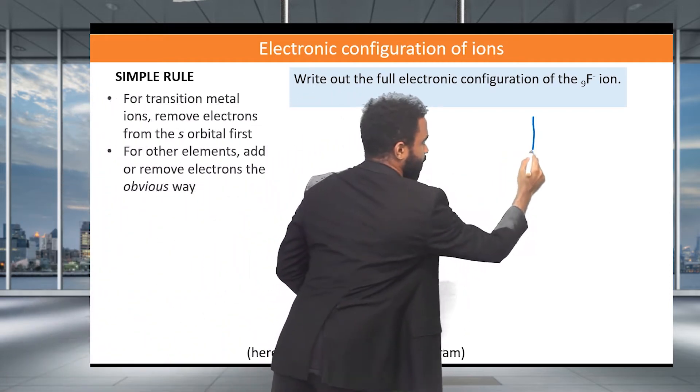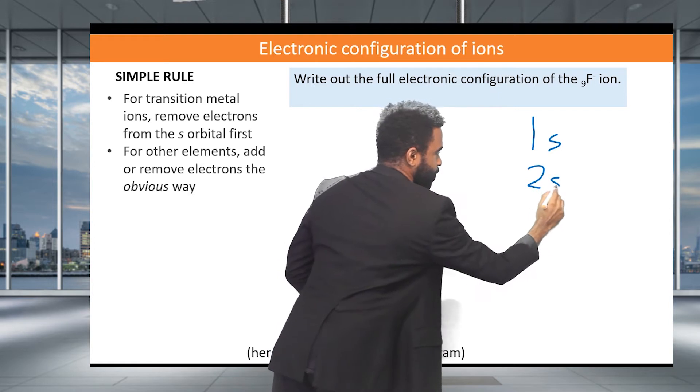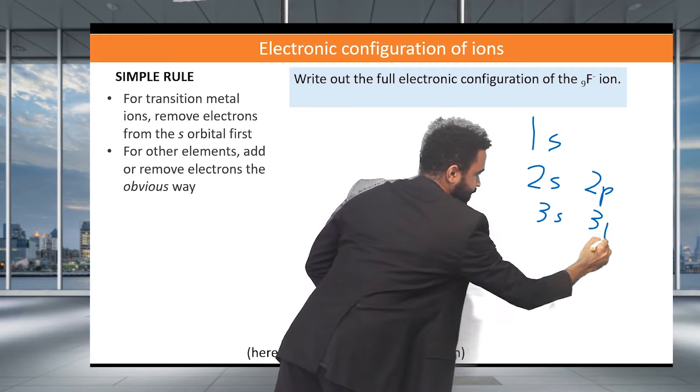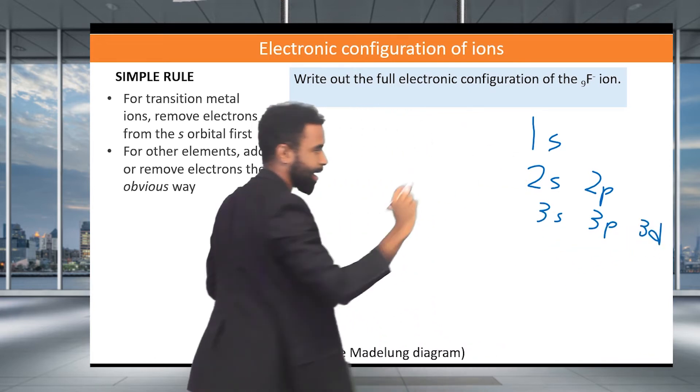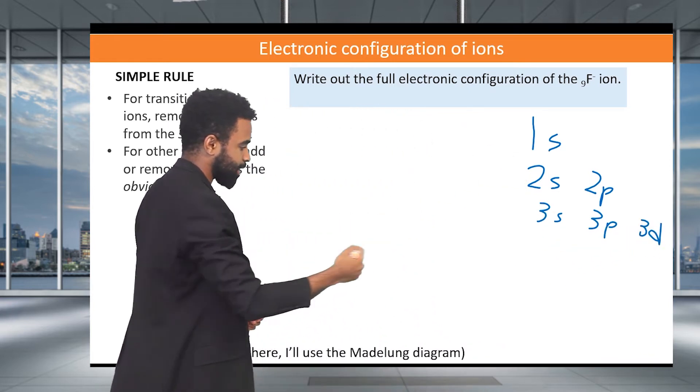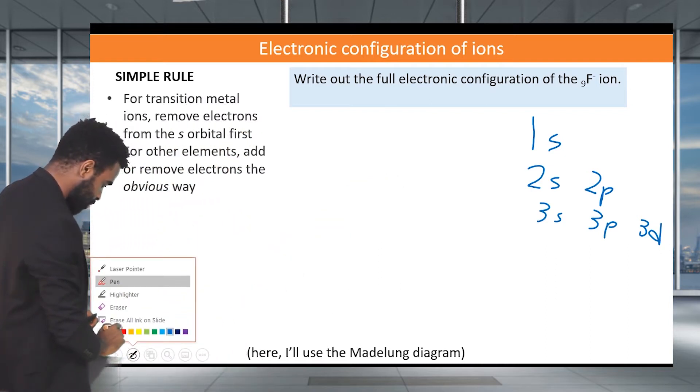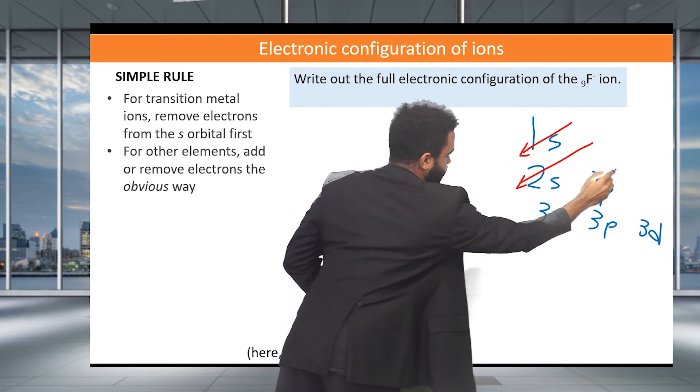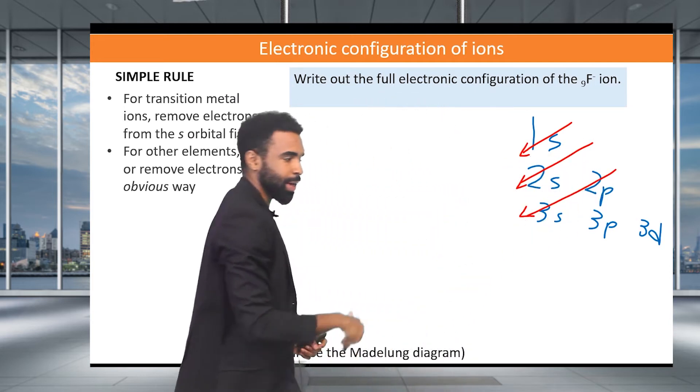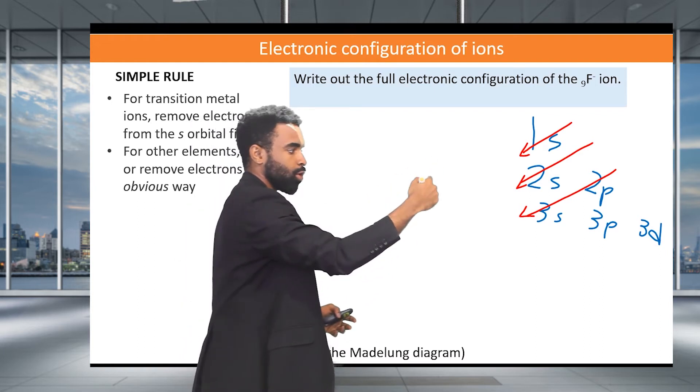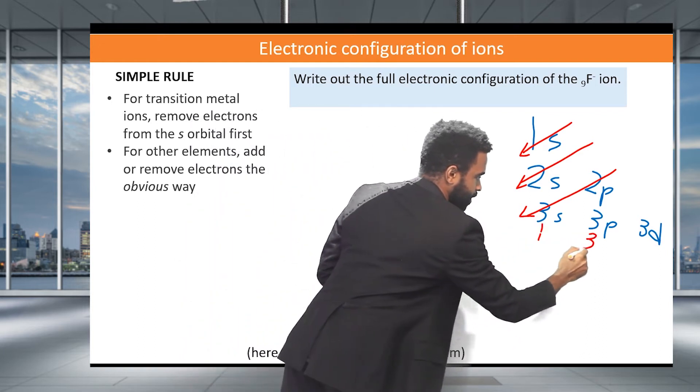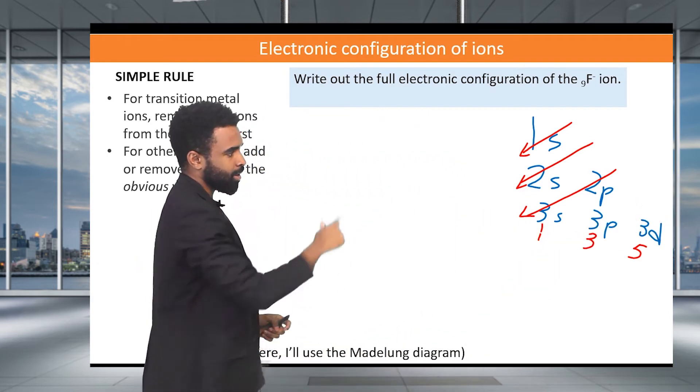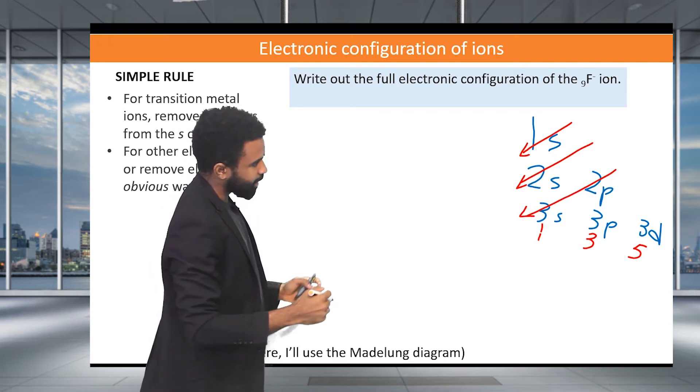You go ahead and you write 1s. Then 2s, 2p. Then 3s, 3p, 3d. And so on and so forth. And then we're going to stab through. We're going to stab through those sub levels in order to figure out the order. And we can also annotate with the number of orbitals in each. You remember for orbitals it goes 1, 3, 5, and then 7 for the f. But we haven't gotten to the f here because I know fluorine doesn't need an f. So let's go ahead and do that.